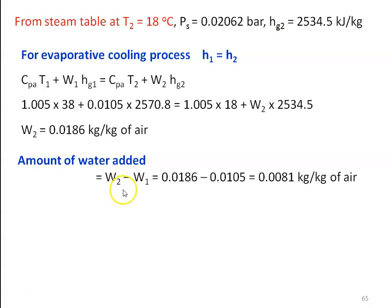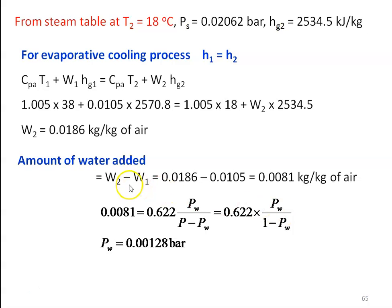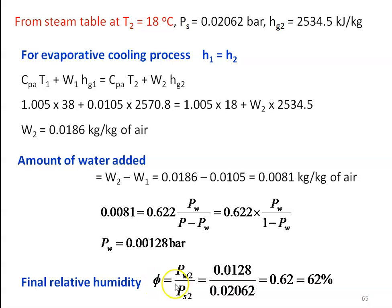The amount of water added equals W2 minus W1. W2 is the specific humidity at the end of the process and W1 is the specific humidity at the beginning: 0.0186 minus 0.0105 equal to 0.0081 kg per kg of air. Using this value, we calculate the partial pressure: 0.0081 equal to 0.622 × PW divided by (P minus PW). Solving, the partial pressure of water vapor equals 0.01280 bar, and relative humidity φ2 equal to 0.01280 divided by 0.02062 equal to 62 percent. The final relative humidity is 62 percent and the amount of water vapor added is 0.0081 kg per kg of air.